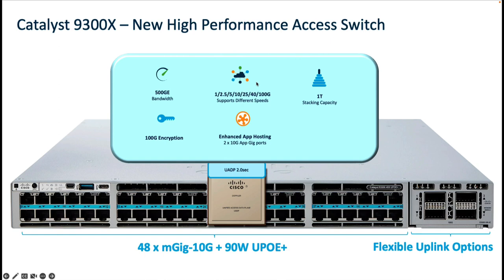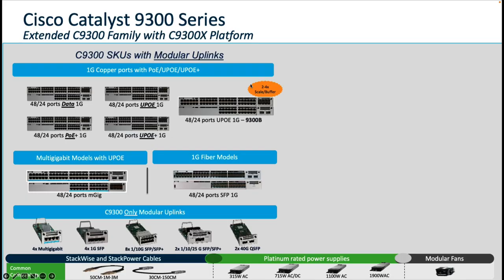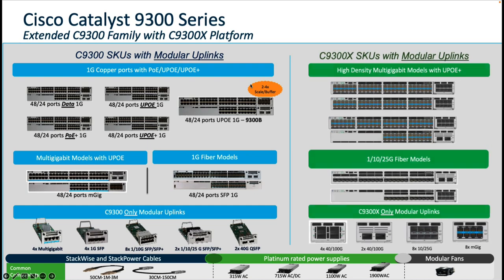The Catalyst 9300X also comes equipped with an enhanced application hosting framework involving double the CPU and memory resources compared to the existing 9300 family. Additionally, we have Quick Assist Technology — QAT — to accelerate applications that use OpenSSL with crypto acceleration.